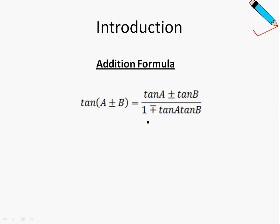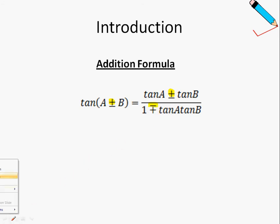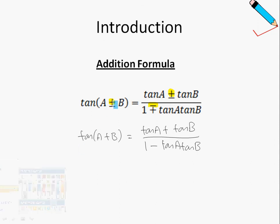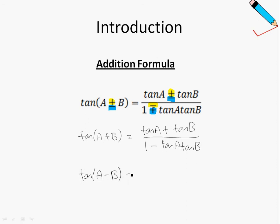Lastly, we have the tangent formula. Similarly, when you have a plus on the left-hand side, then you're dealing with a plus sign in the numerator and a negative sign in the denominator. So tangent of A plus B is equals to the tangent A plus the tangent B, over 1 minus tangent A tangent B. When you have a minus on the left-hand side, you have a minus in the numerator but a plus in the denominator. So tangent of A minus B is equals to the tangent of A minus the tangent of B, over 1 plus the tangent of A times the tangent of B.